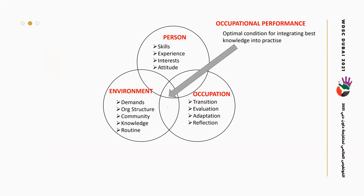Occupational performance is the optimal condition for integrating best knowledge into practice. It has three components: person, environment, and occupation. The person component covers skill, experience, interest, and attitude. The environment component includes demands, structure, community, knowledge, and routine. The occupation component includes transition, evaluation, adaptation, and reflection.